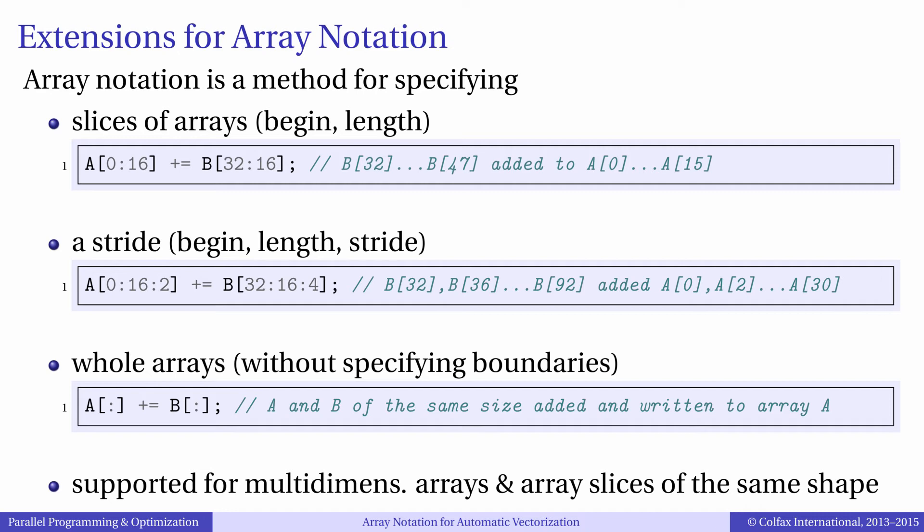Here are some examples of array notation. In this expression, we add 16 elements of array b to 16 elements of array a. In the array notation, first number indicates the beginning of the slice, second number corresponds to the length or number of array elements we want to use, and later we will show that the third number can be used to specify the stride.